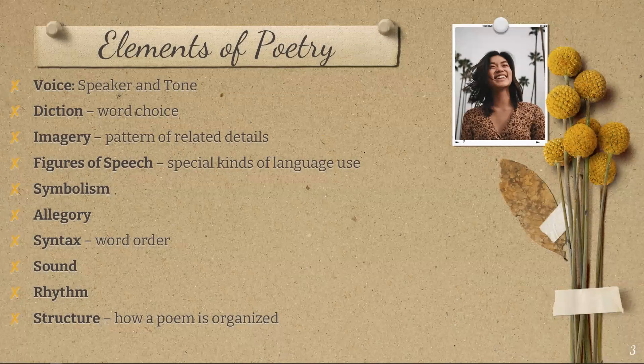Elements of poetry. Voice or speaker and tone refers to the poet's implied attitude toward the subject. Tone is an abstraction we make from the details of a poem's language. It involves the use of meter and rhyme, the inclusion of certain kinds of details, exclusion of other kinds, particular choices of words and sentence pattern, imagery, and figurative language. In short, tone has a great deal to do with meaning.